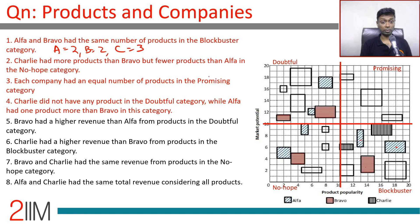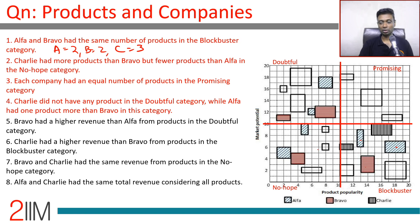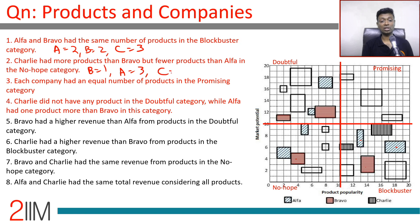Charlie had more products than Bravo but fewer than Alpha in the No Hope category. Alpha already shows two, Bravo has one. If Bravo had two, Charlie would need at least three and Alpha at least four — not possible. So Bravo has one, Alpha has three, and Charlie has two in the No Hope category.